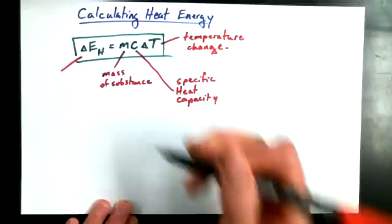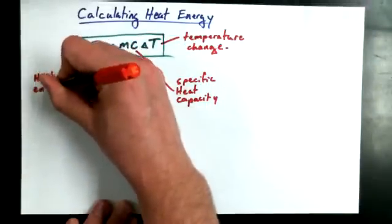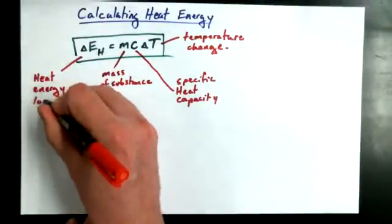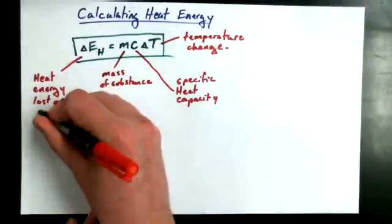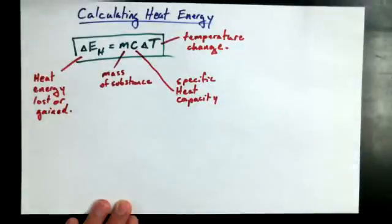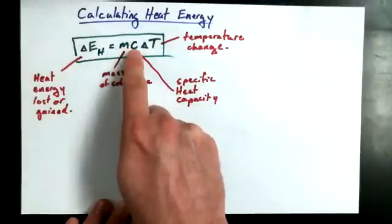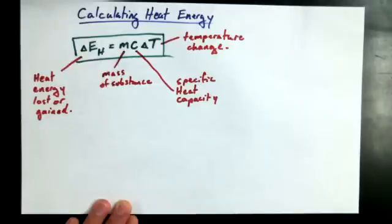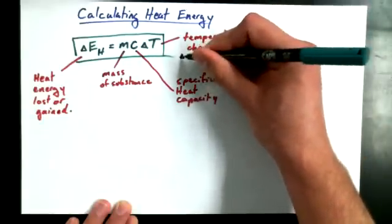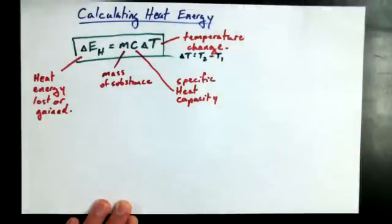And we already said this previously, but delta E-H would be the heat energy either lost or gained. And if it's a positive value, then it's heat energy gained. And if it's a negative value, then it's heat energy that's lost. And a way that you're going to introduce the positive and negative sign, because you can't have positive or negative mass, and actually the heat capacity, I'll show you in a minute, is always positive.